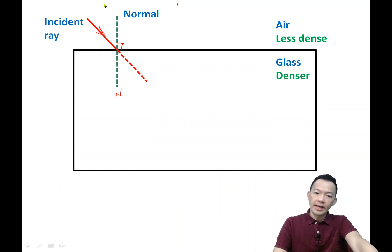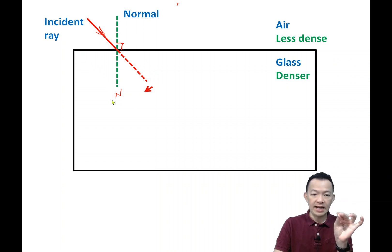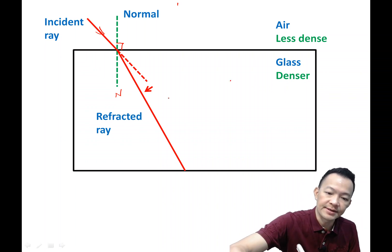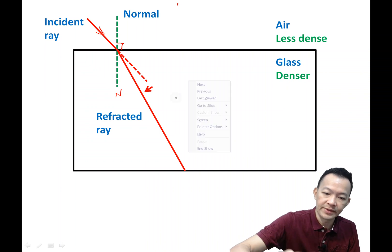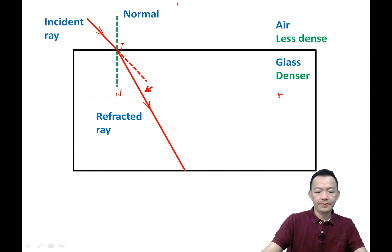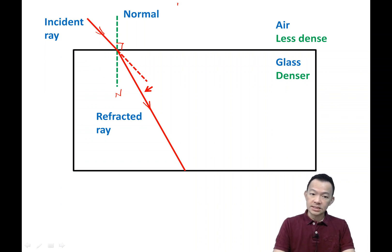So how is the light deflected? When the light travels from a less dense medium entering a denser medium — from air into glass — the light will be deflected towards the normal. So this is your deflected ray. The light will be deflected towards the normal.